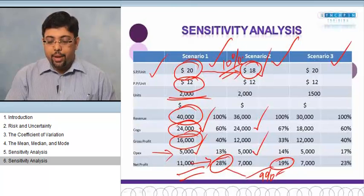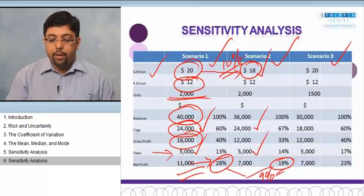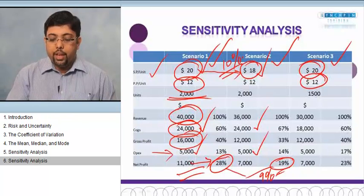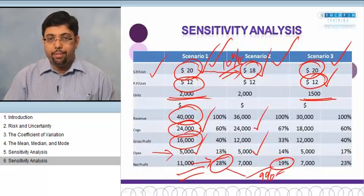This is a scenario analysis. In the third scenario, what I have done is I have taken the same $20 and same $12 as COGS, but I have changed the volume or the quantity which we are selling.